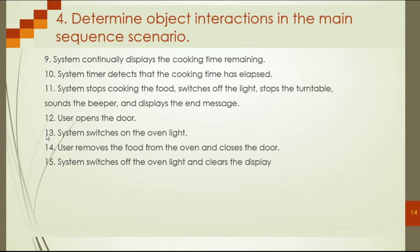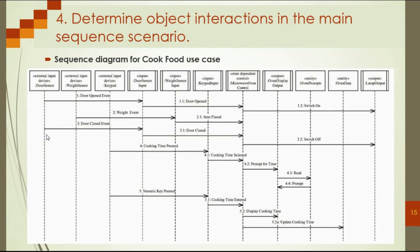The output of the state machine is sent back to the state-dependent interaction model. Here we can see all the objects: the door sensor, the weight sensor, the keypad sensor as inputs. We also have the state-dependent control objects, the output objects, and entity objects — an input object for each device.